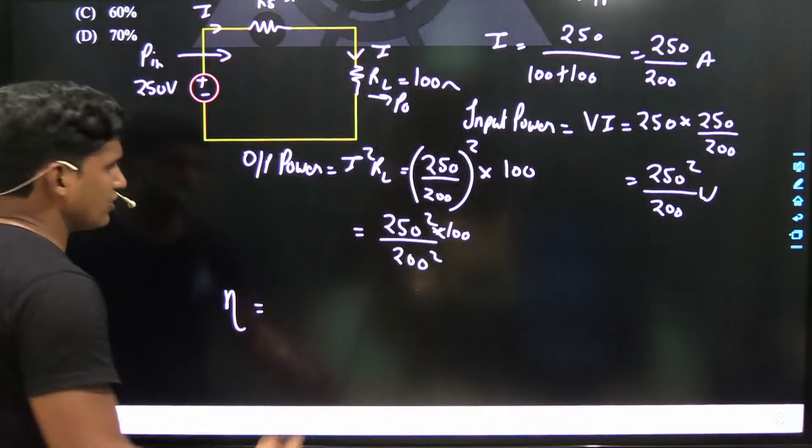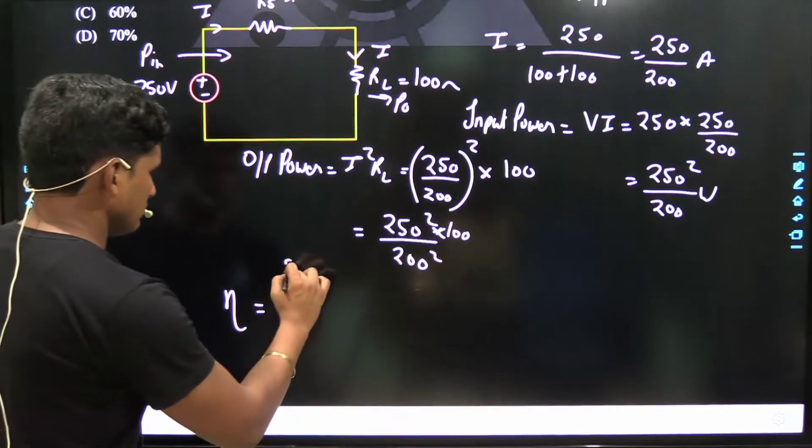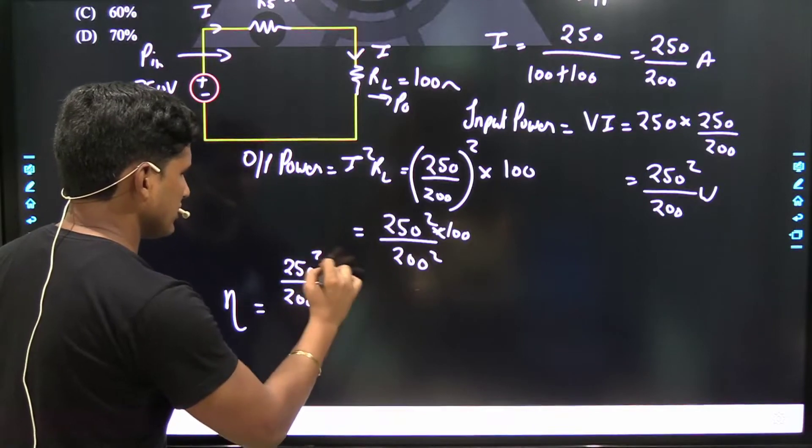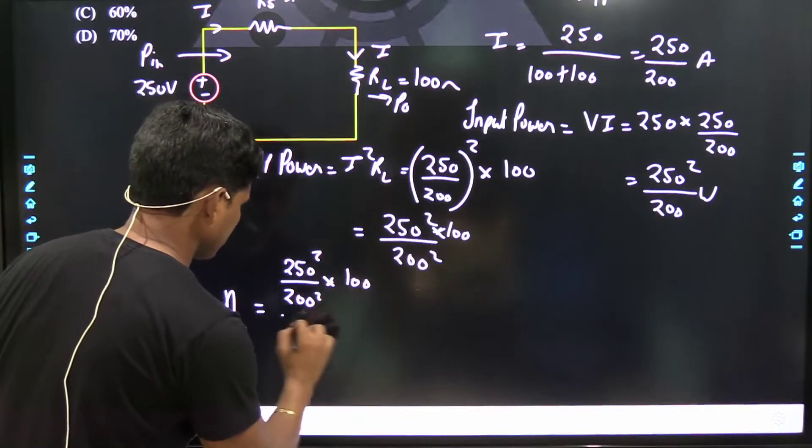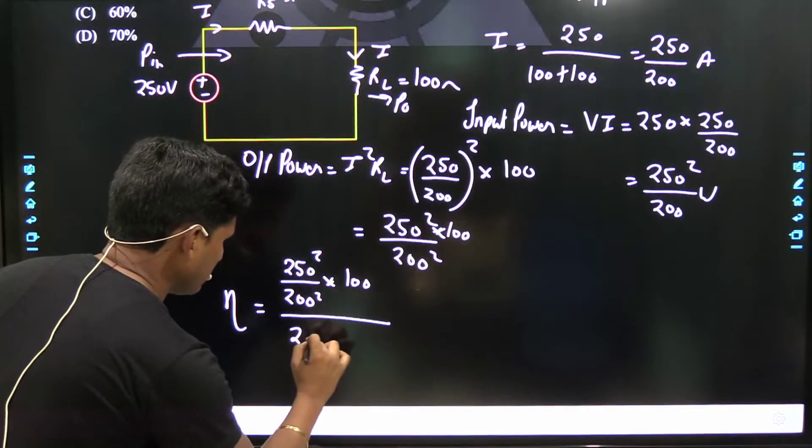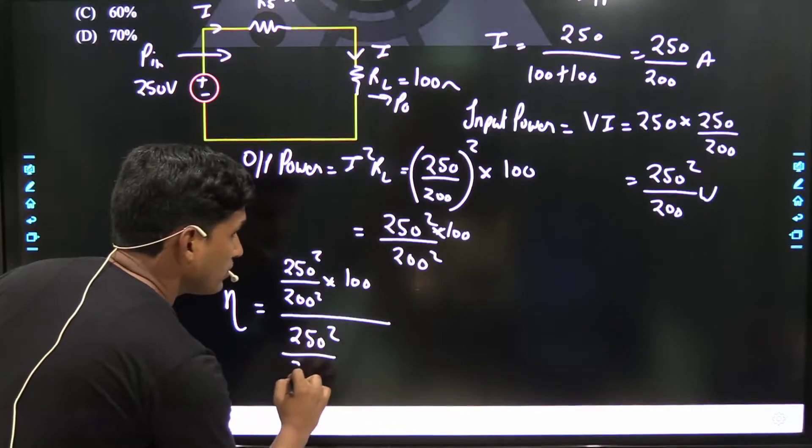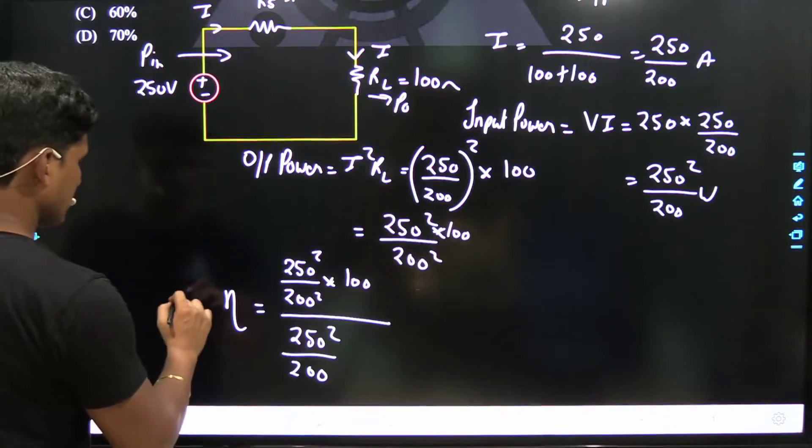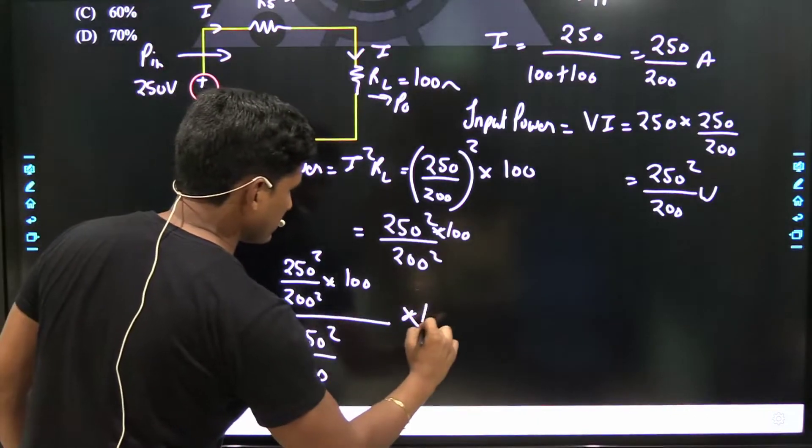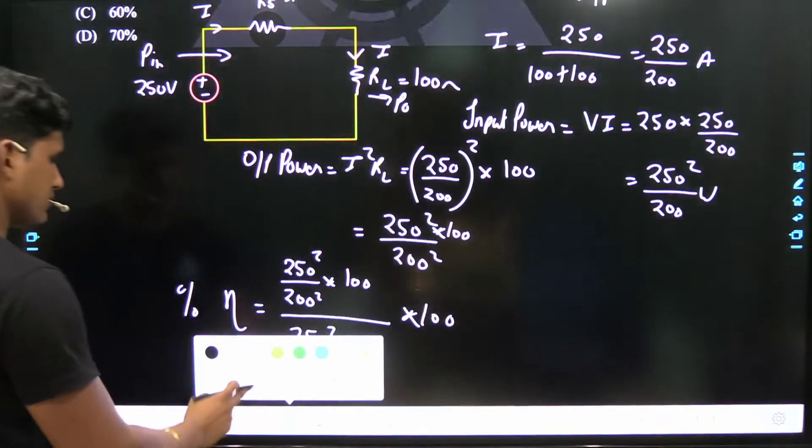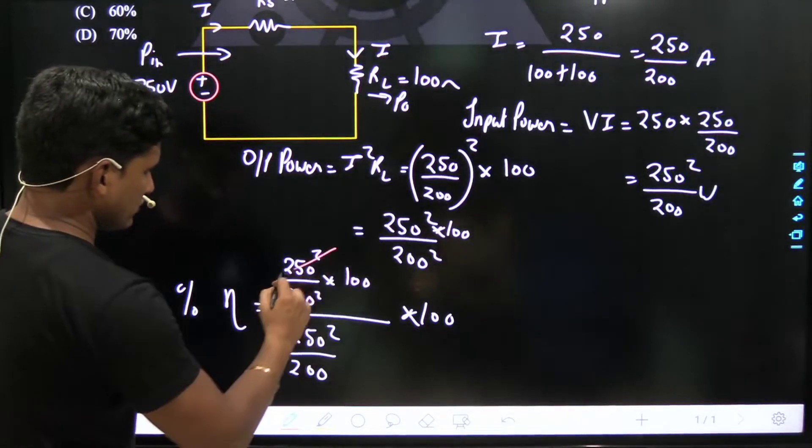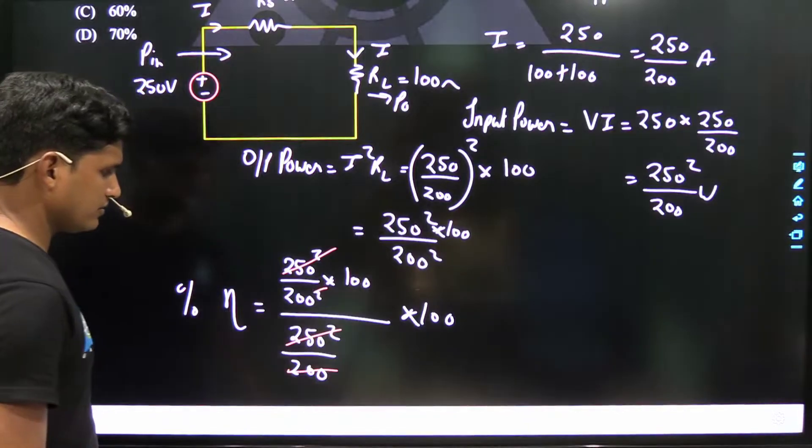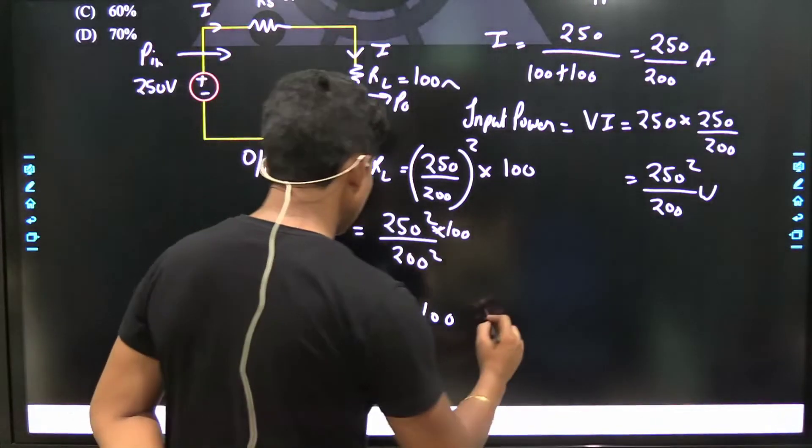Now, if we talk about efficiency, the efficiency equals output power, that is 250 upon 200 square into 100, divided by input power 250 square upon 200. If we talk percentage, that is times 100. This will cancel out - 250 square, 250 square, 200, 200.